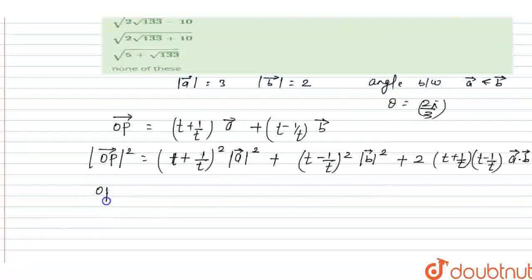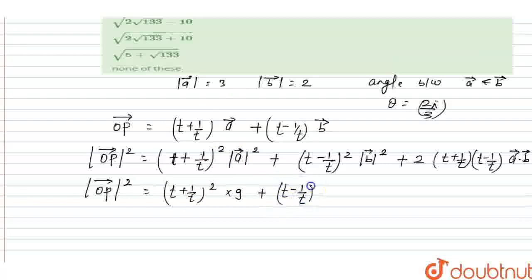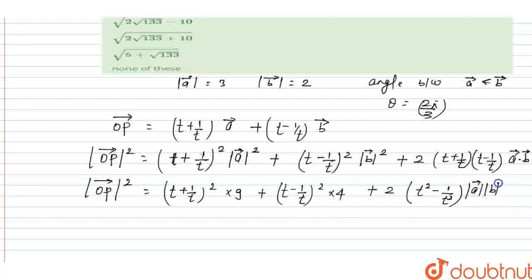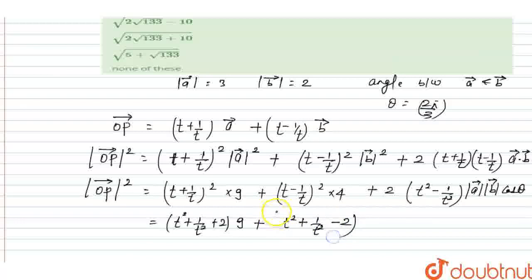|OP|² = (t + 1/t)² × 9 + (t - 1/t)² × 4 + 2 × (t + 1/t)(t - 1/t) × vector a · vector b. The term (t + 1/t)(t - 1/t) is of the form (a+b)(a-b) = t² - 1/t². And vector a · vector b = |a||b|cos θ = 3 × 2 × cos(2π/3) = 6 × (-1/2) = -3.